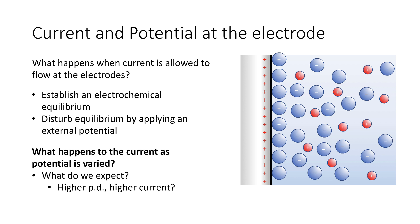If we apply a higher potential difference, do we get a higher current? Is there a linear relationship between them, and should there be a linear relationship between them? Through exploring these questions, we will start to find out what's going on at the electrode.